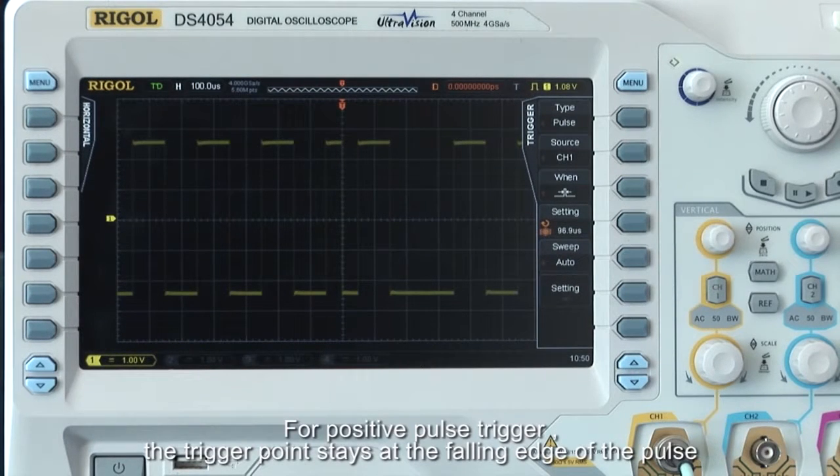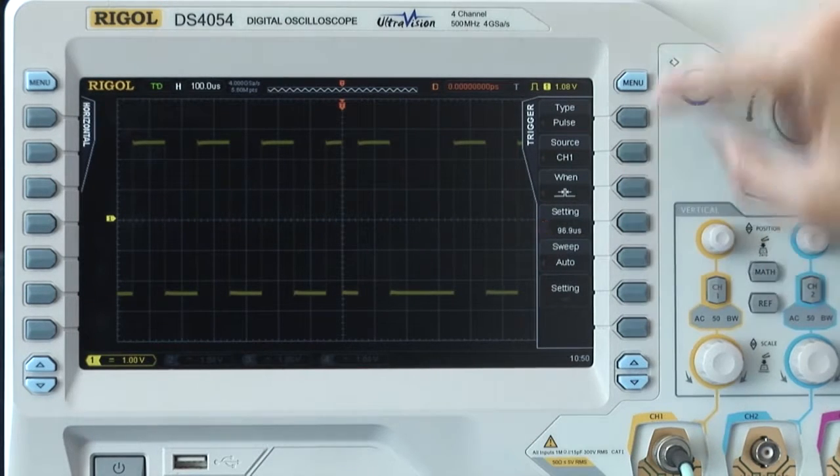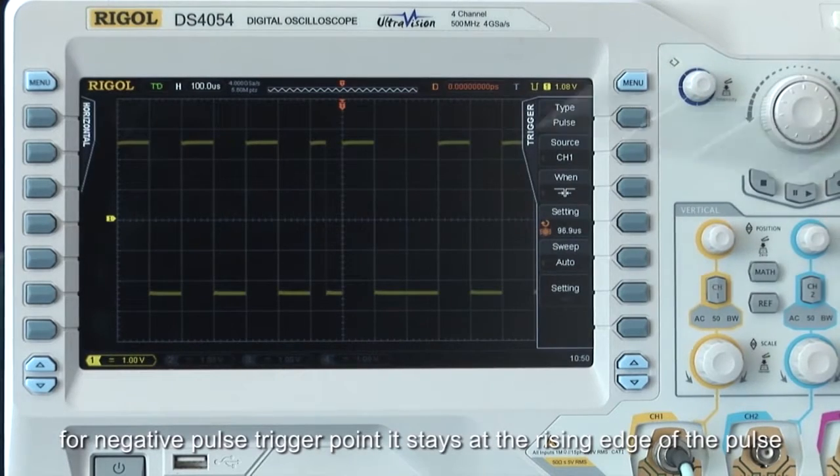For positive pulse triggers, the trigger point stays at the falling edge of the pulse. For negative pulse triggers, it stays at the rising edge.